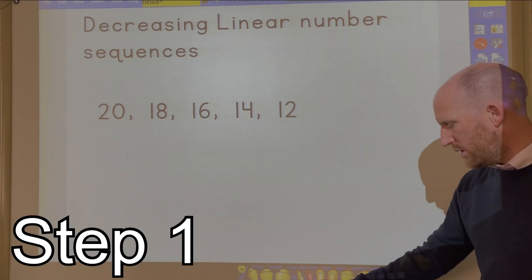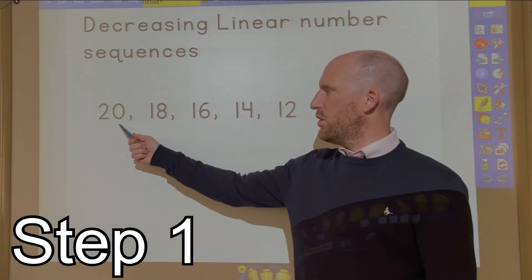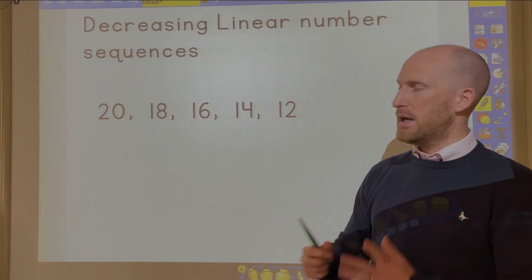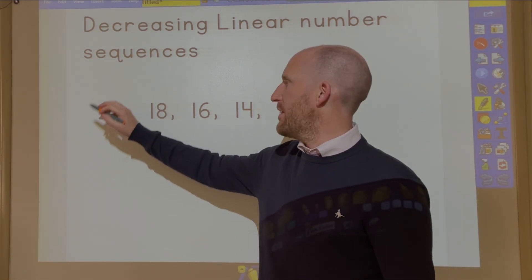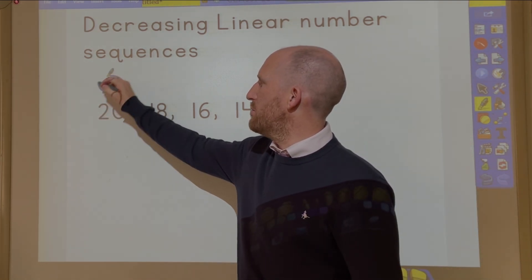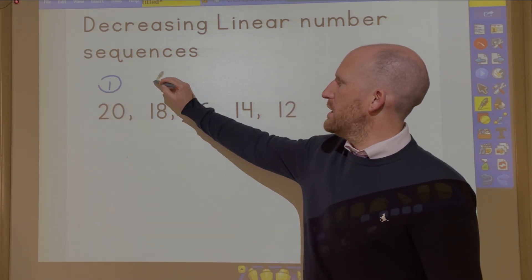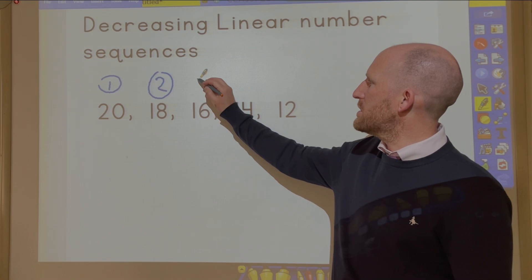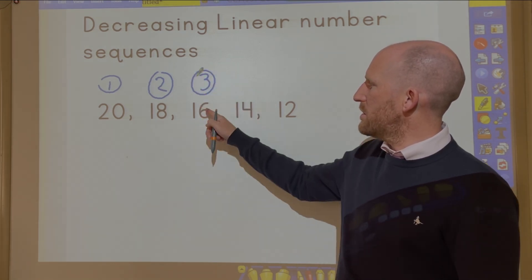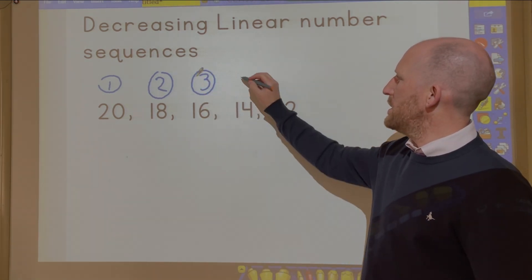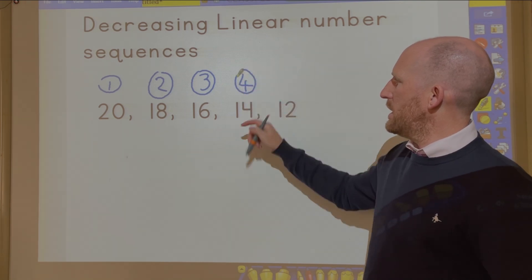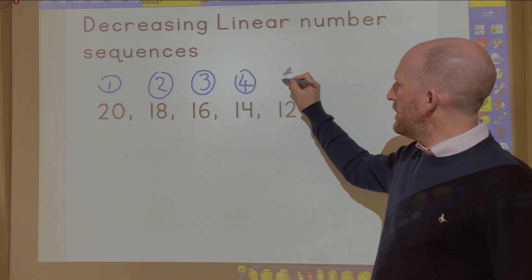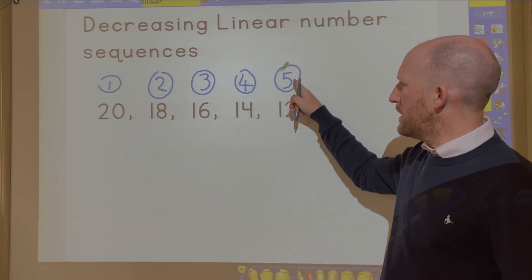Now the first thing you need to do is you need to label all the numbers by the order that they are in. So this is the first number in the sequence, the 18 is the second number in the sequence, this is the third number in the sequence, this is the fourth number in the sequence, this is the fifth number in the sequence.